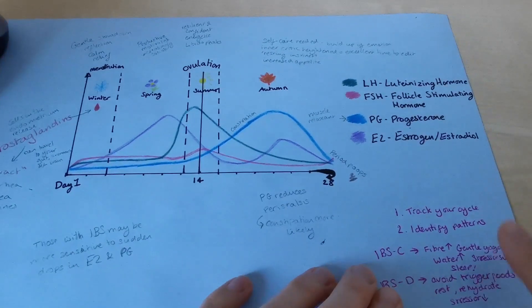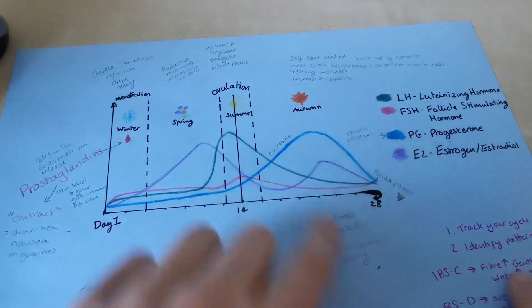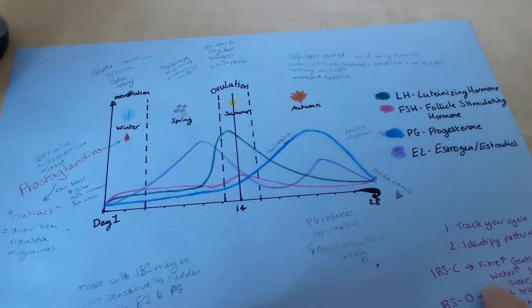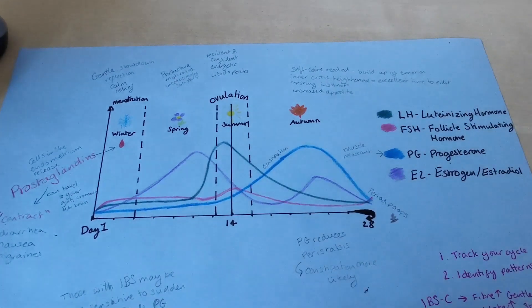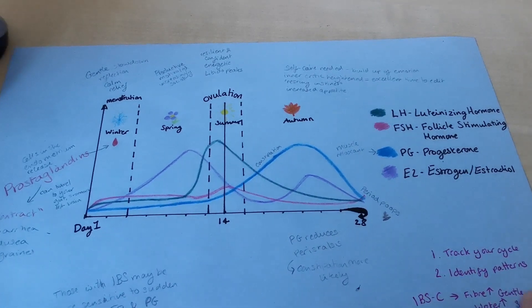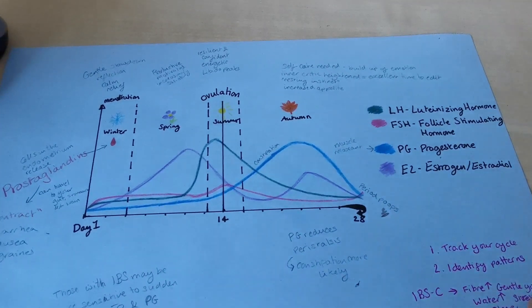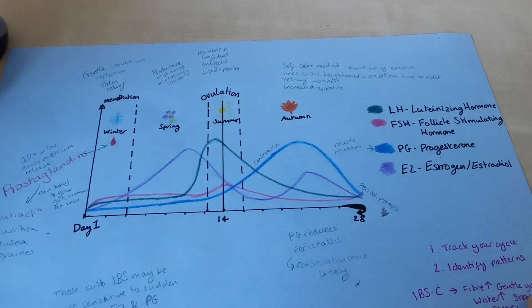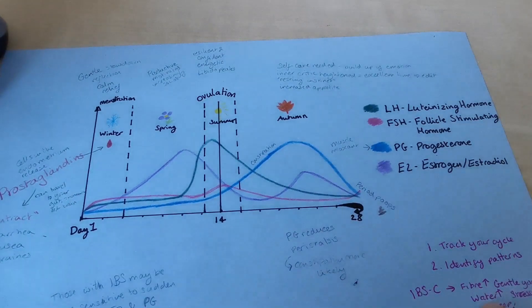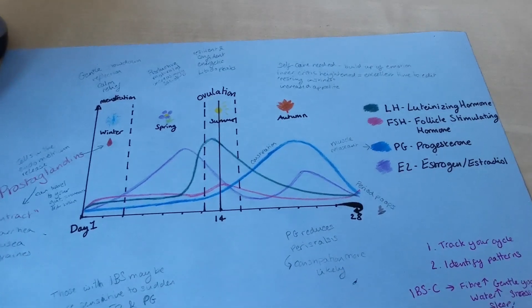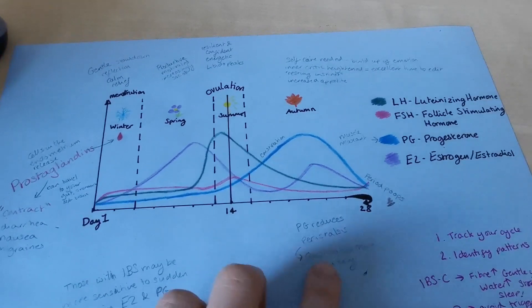And then if you're prone to constipation around your autumn, you might know this is a really important time for me to increase my fibre, but not necessarily the FODMAPs that are my triggers. Turn to things like gentle yoga to kind of massage your abdomen. So some of the videos on my channel will be really good for that and others, of course.